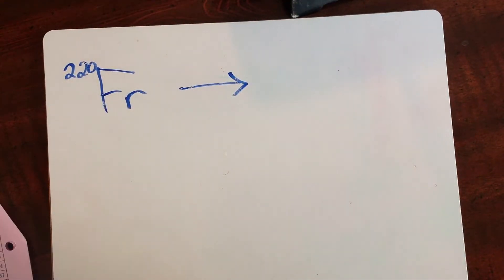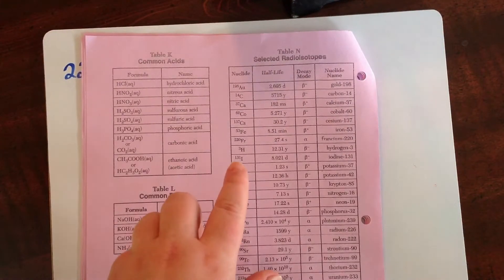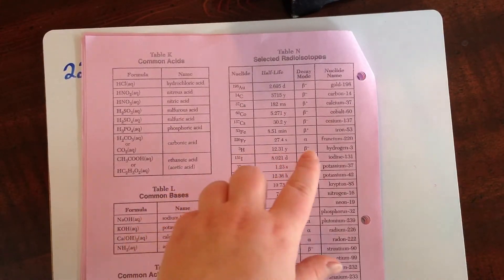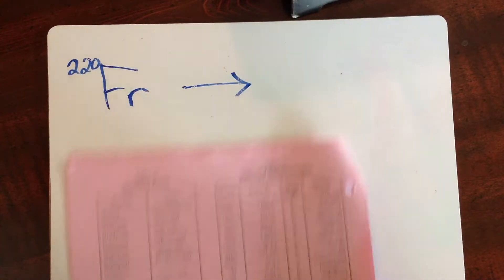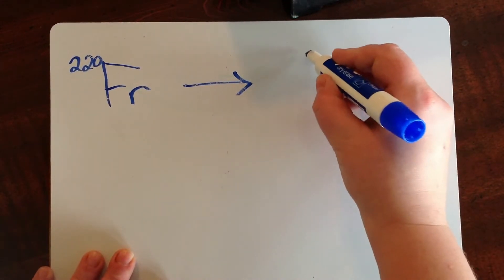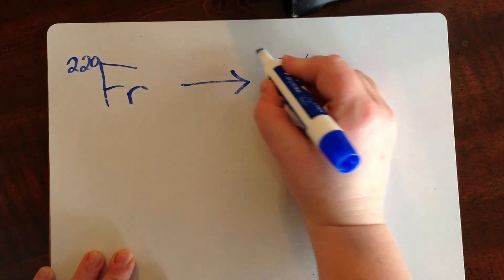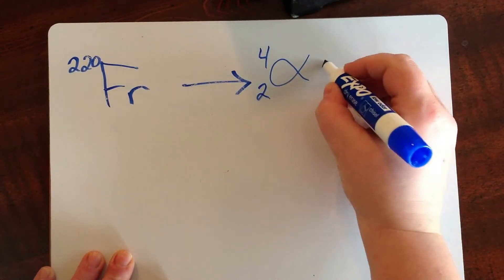So if we come over here, we are going to write the equation for the radioactive decay of francium 220. First we need to figure out what type of decay that is. So if we come over here, we've got francium 220, and it tells us it undergoes alpha decay. So that tells us that one of those products is going to be the alpha particle. And the alpha particle has a little 4 up top and a 2 on the bottom.